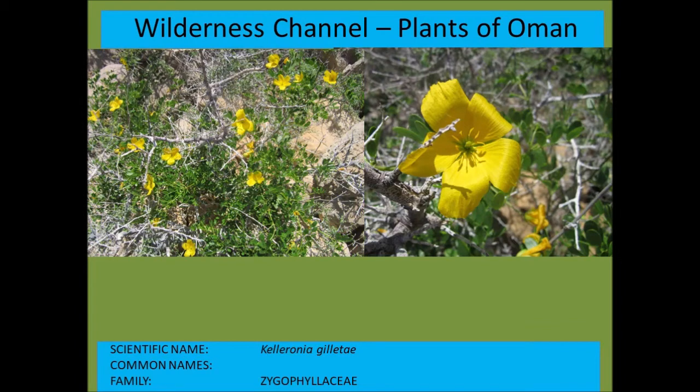Kaleronia gelettii is a very pretty and quite robust yellow-flowered plant growing on a small bush found in Dhofar.